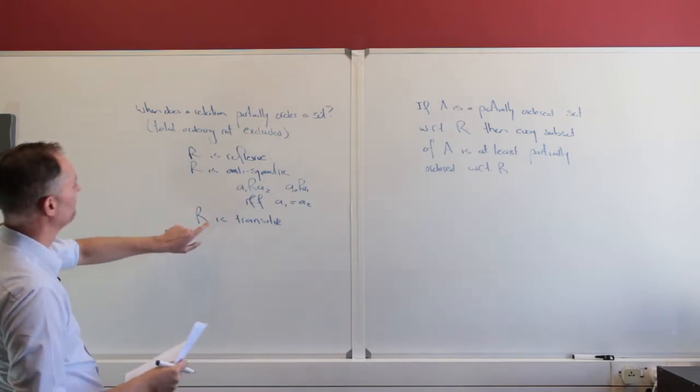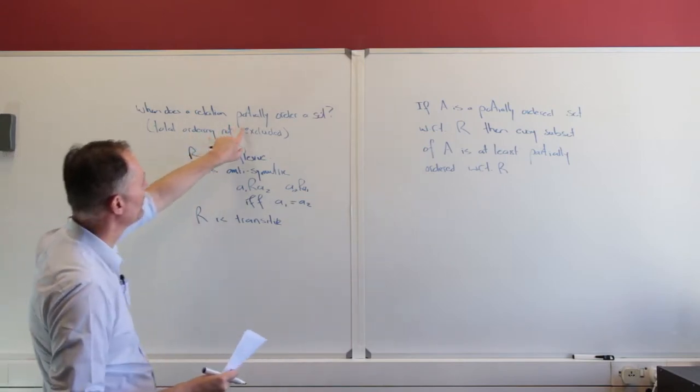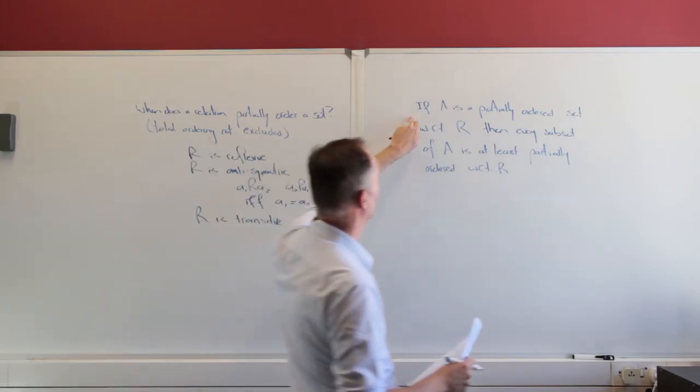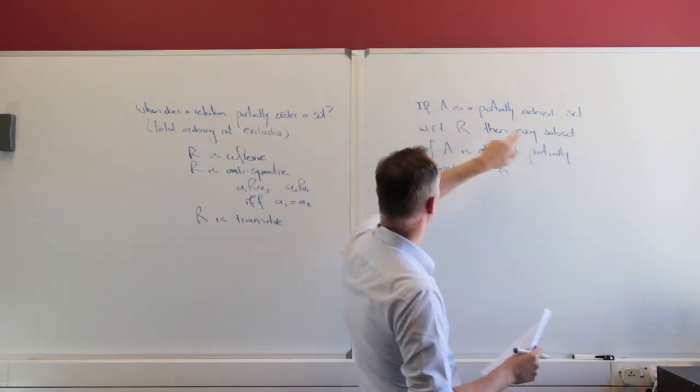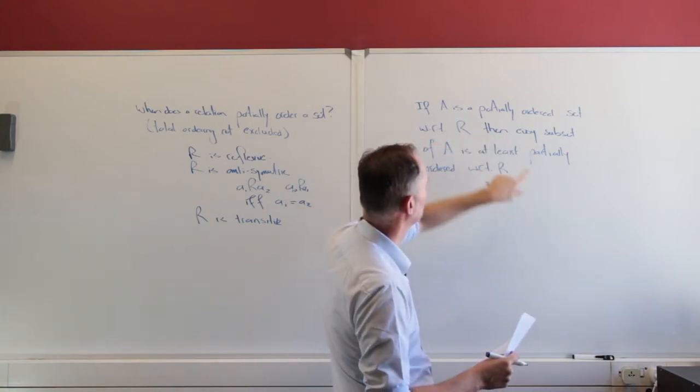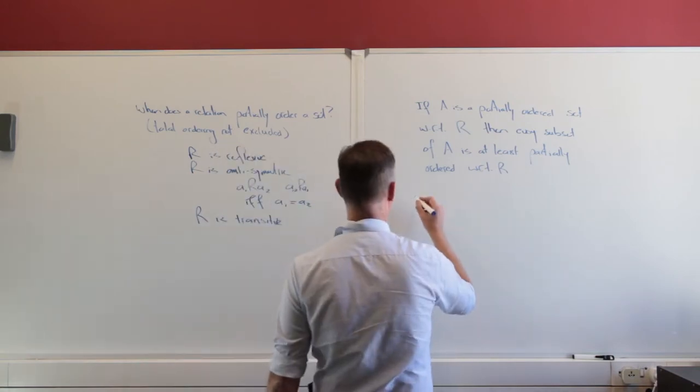Anyway, long night. So it must have these properties for that to partially order a set and then of course total ordering is not included because look at the statement. If a is a partially ordered set with respect to some relation,